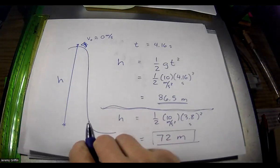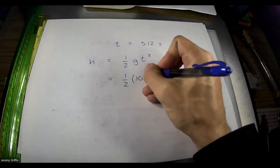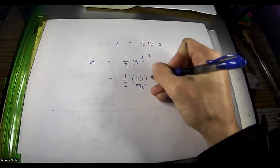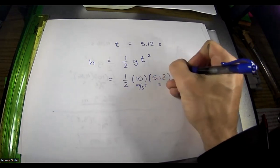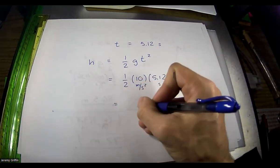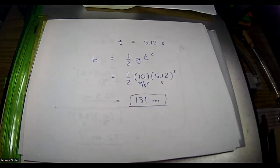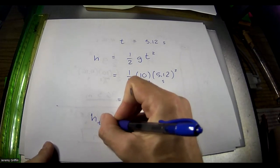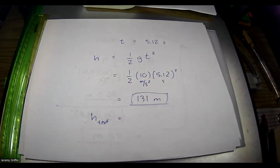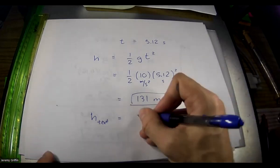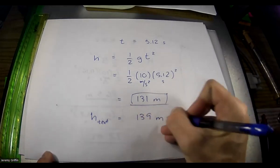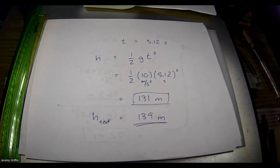Those are good things to think about — we are making first-order simplifications here. So with t = 5.12 seconds and g = 10 m/s², we get about 131 meters. The textbook height — really from the internet where everything is true — is 139 meters. You guys got really close.